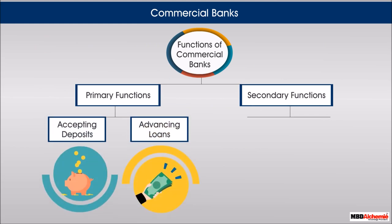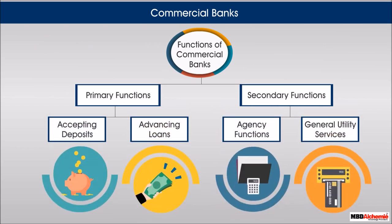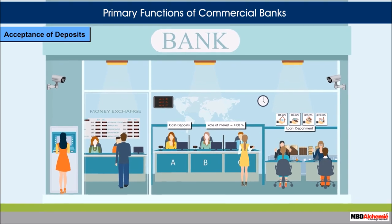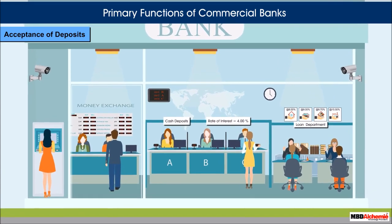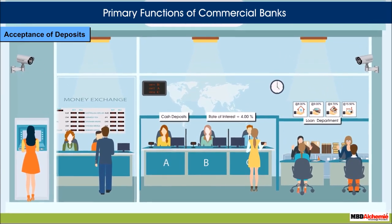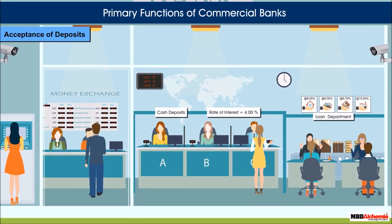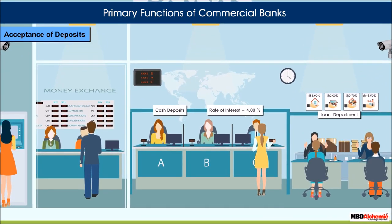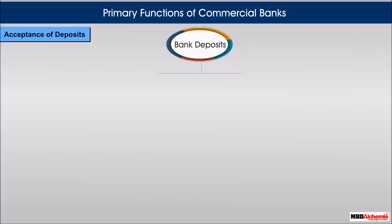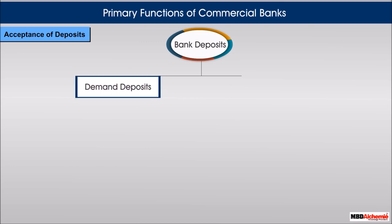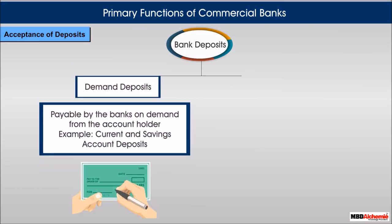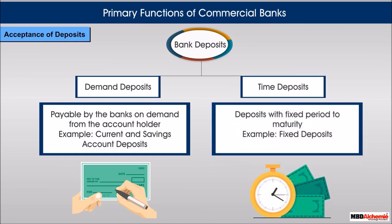Functions of commercial banks include primary functions and secondary functions. Commercial banks accept deposits from the public and lend this money to companies and other people for investment projects. The banks offer interest on deposits to the deposit holders. Deposits are broadly classified into demand deposits, which are payable by the banks on demand from the account holder, and time deposits, which have a fixed period to maturity.